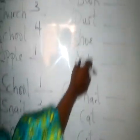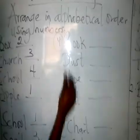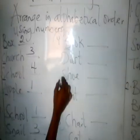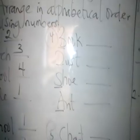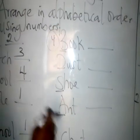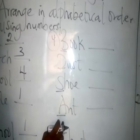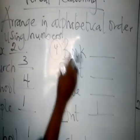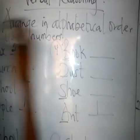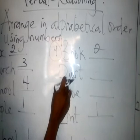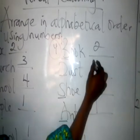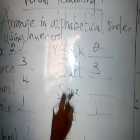Number four. Here we have Book, we have Dust, we have Shoe, and we have Hands. We take the first alphabet of each word. B will come second, D will come third, H will come first, and S will come last — so put 1 for Hands, 2 for Book, 3 for Dust, and 4 for Shoe.